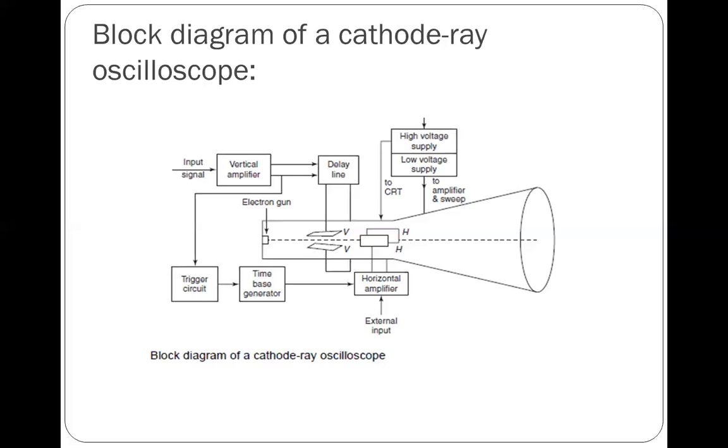Power supply: The high and low voltage power supply blocks provide the voltages required by the cathode ray tube to generate and accelerate the beam, as well as to supply the required operating voltages for the other circuits of the oscilloscope.